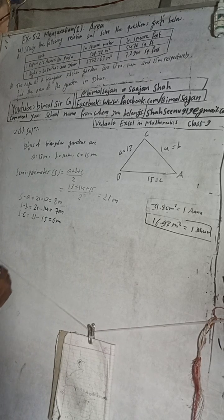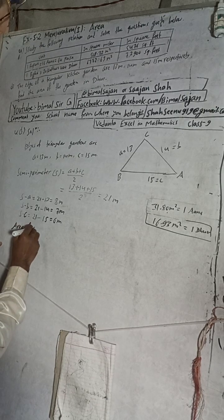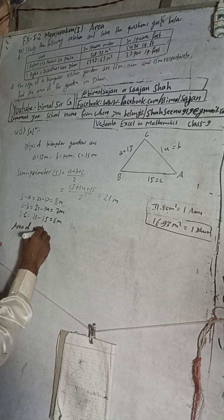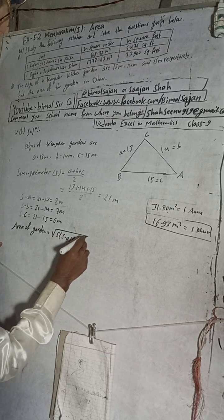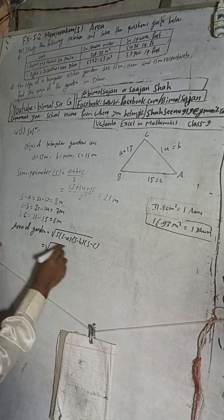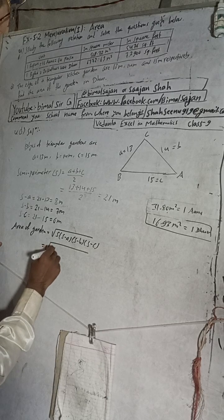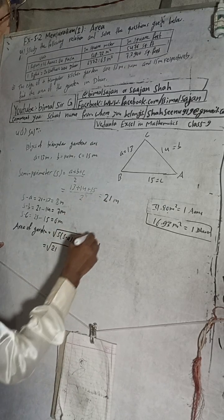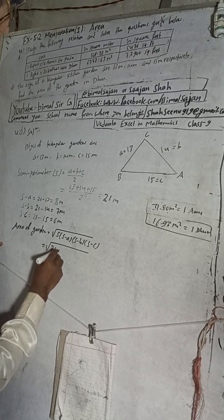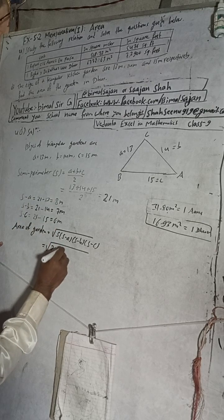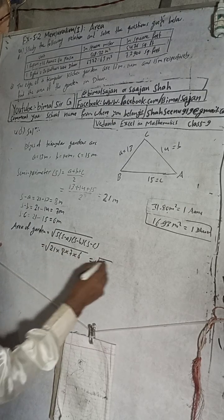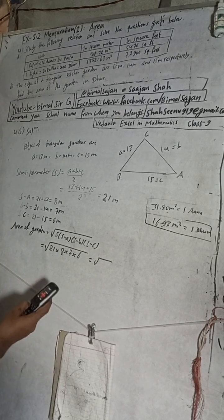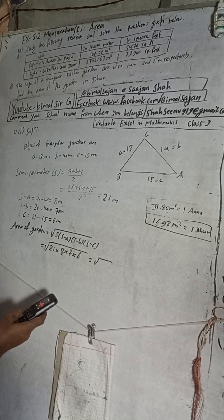Now, area of the garden. Area of the garden is equal to root under s into s minus a into s minus b into s minus c. So that is: root of 21 into 21 into 18 into 7.